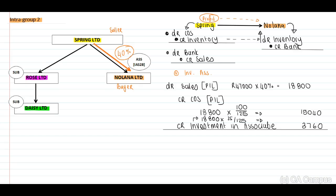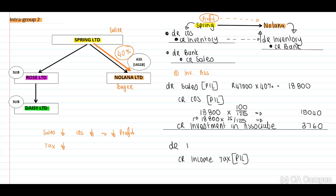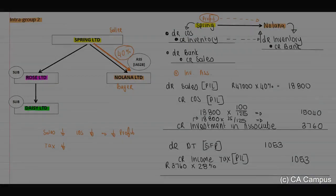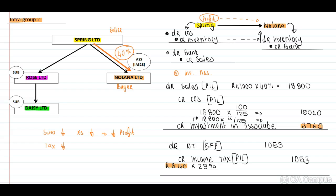Now for the tax journal: when our sales decrease and cost of sales decrease, this results in a decrease in profit. If profit decreases, tax decreases. Therefore we credit income tax in profit and loss and debit deferred tax on the statement of financial position: 3,760 × 28% = 1,053. This will be journal number four and journal number five.